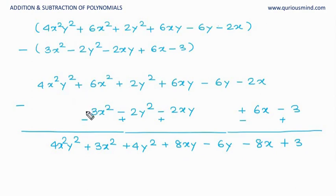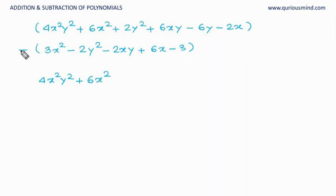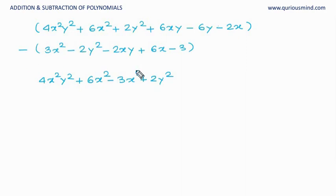Now let's do this with the horizontal method. We write the first expression as it is. Start with 4x²y² — is there any like term for x²y²? No, so we move on. 6x square — is there a like term? Yes, 3x square, but there is a minus sign outside, so plus and minus becomes minus 3x square. Next, minus 2y square — there is a minus 2y square in the second expression; minus and minus gives plus, so plus 2y square.